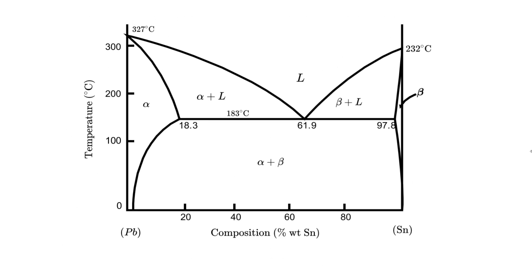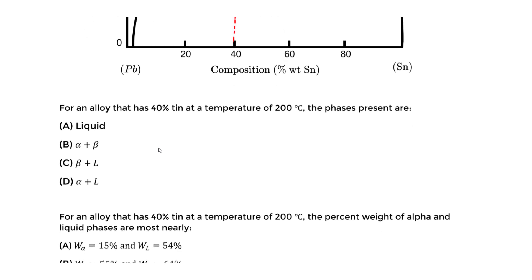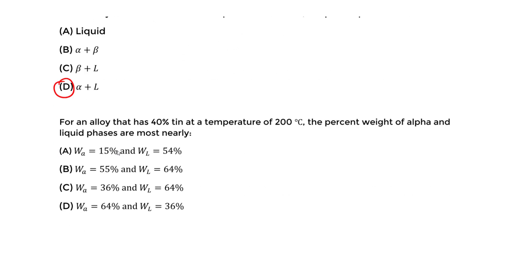All you do is plot this point. Go to 40% tin and 200°C on the temperature axis, and we find ourselves in the alpha plus liquid region. So the answer is D.